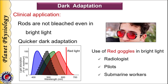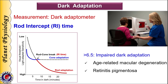Because of this, professionals who need to work in dim light — such as radiologists, aircraft pilots, or workers in submarines — are suggested to wear red goggles in bright light so that they can immediately see clearly in the dark just by removing their goggles. Dark adaptation time can be measured by a dark adaptometer, which measures rod intercept time, also called RI time — the number of minutes required for the eye to adapt from bright light to darkness. An RI number higher than 6.5 indicates impaired dark adaptation, which is observed as an early sign of age-related macular degeneration and retinitis pigmentosa, enabling early diagnosis before clinical manifestations appear.